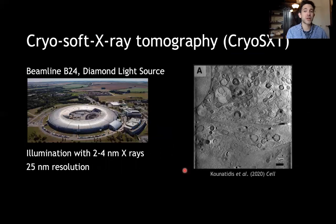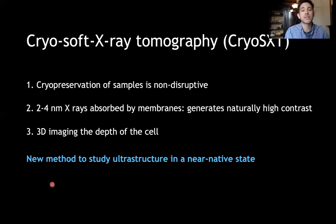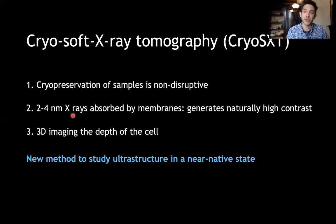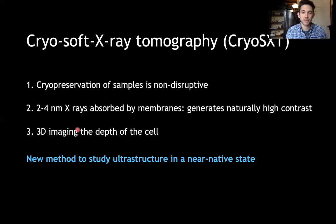With x-ray tomography, you can produce images of cell ultrastructure that resemble electron micrographs but achieve a resolution of 25 nanometers. There is good reason to favor x-ray tomography over higher resolution EM. We can prepare the samples by cryopreservation, which protects the native ultrastructure — so it's a non-disruptive technique. We can also image the sample with long wavelength x-rays that are absorbed by ultrastructural features and can generate naturally high contrast, making it a label-free imaging technique — you don't need to add anything like heavy metal atoms. And you can image the entire depth of the cell and produce a 3D image, which is really useful for studying the geometry of cellular compartments.